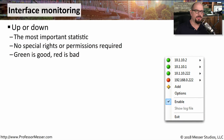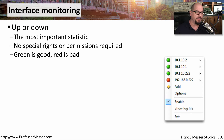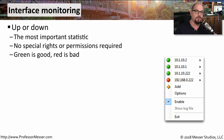If you set up a monitoring system on your network, one of the key components you're going to monitor will be interfaces. You need to know whether an interface is up or whether it's down. This can often be one of the most important things you need to know about a particular device. Fortunately, monitoring an interface doesn't require any special rights or permissions — you can simply ping the interface to see if it's still running.